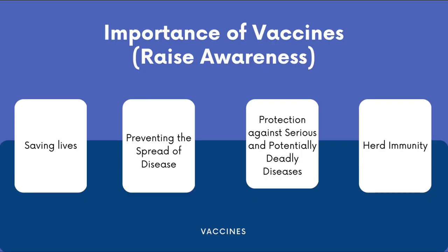Now we look at the importance of vaccines in spreading awareness among the public. First, saving lives — vaccines have saved many lives by preventing the spread of infectious disease. Second, preventing the spread of disease — vaccines can help prevent the spread of disease both within a population and across borders. This is important for controlling and preventing pandemics.